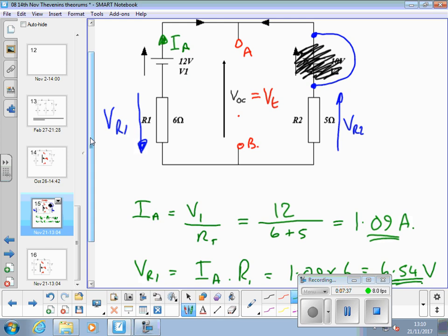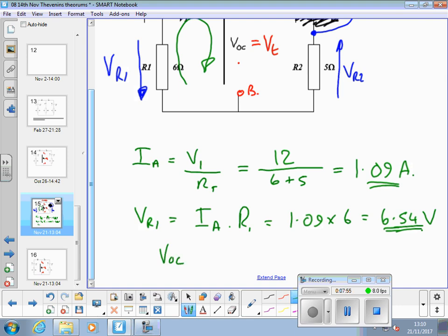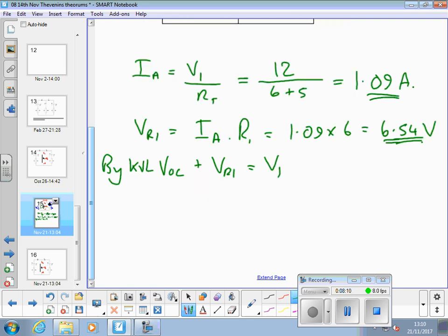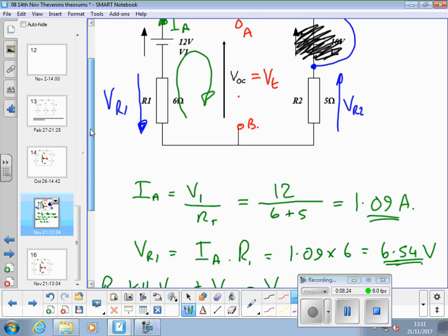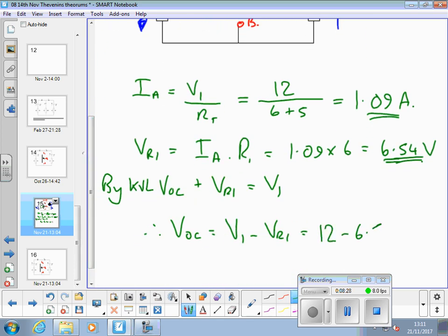Because here's a Kirchhoff voltage law loop. We've got two anticlockwise arrows, one of them and one. So we can say VOC plus VR1 is equal to V1 by Kirchhoff voltage law. Therefore VOC is equal to V1 minus VR1. That is 12 minus 6.54 equals 10.84 volts.